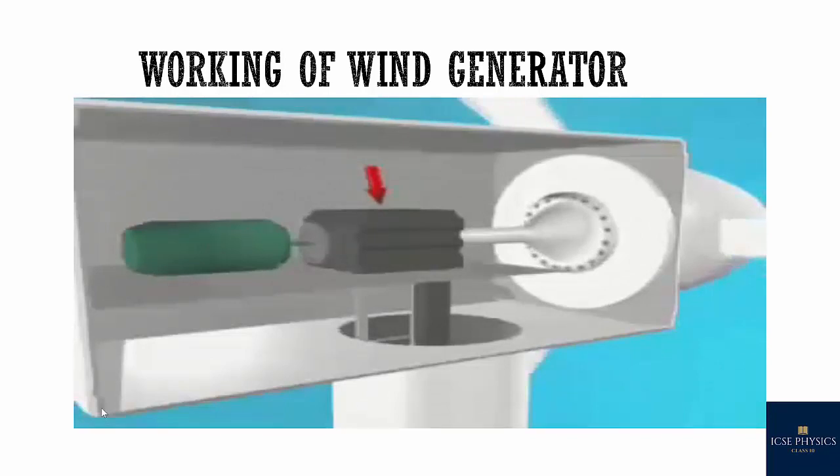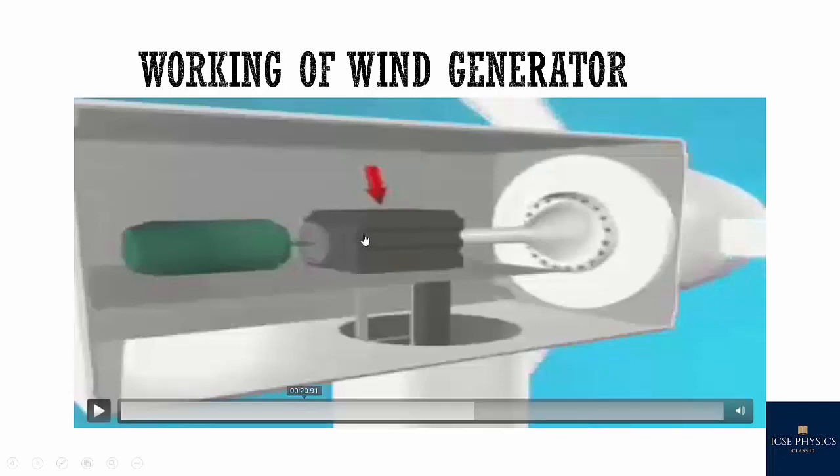When the blowing wind strikes the blade of the windmill or turbine, the kinetic energy of the wind changes into rotational kinetic energy of the blades. Then the rotation of blades of the turbine rotate the armature of the generator. Once these blades rotate, it rotates the armature of the generator or dynamo.